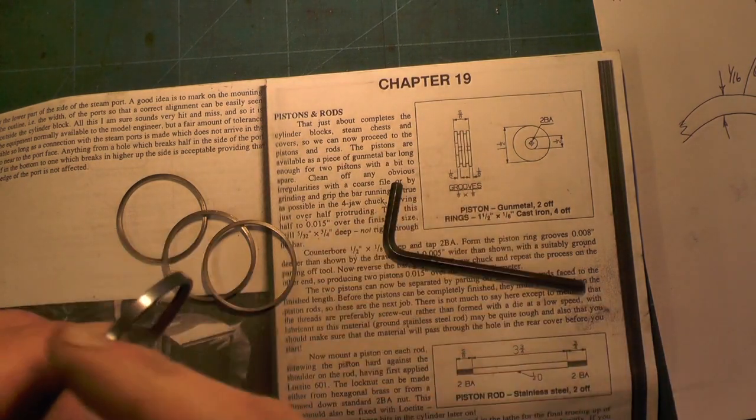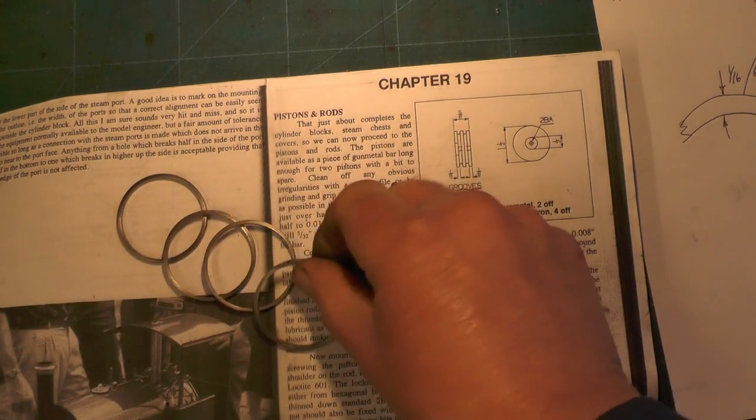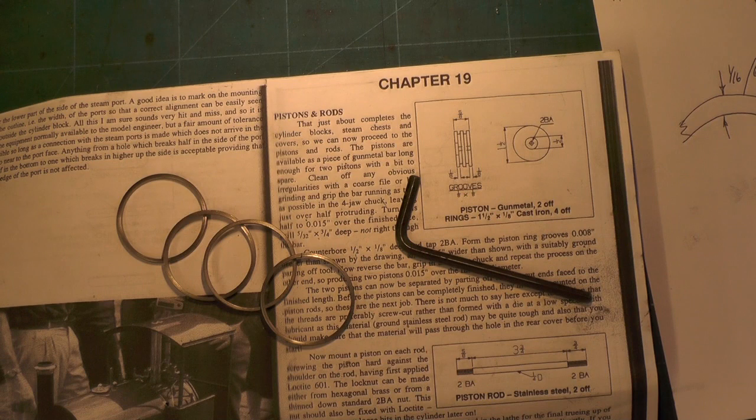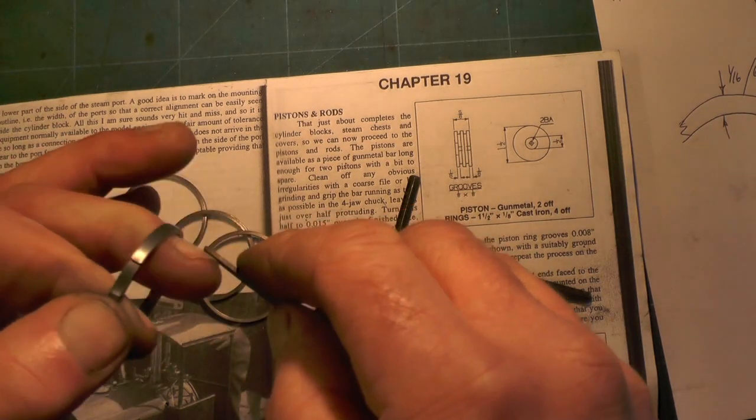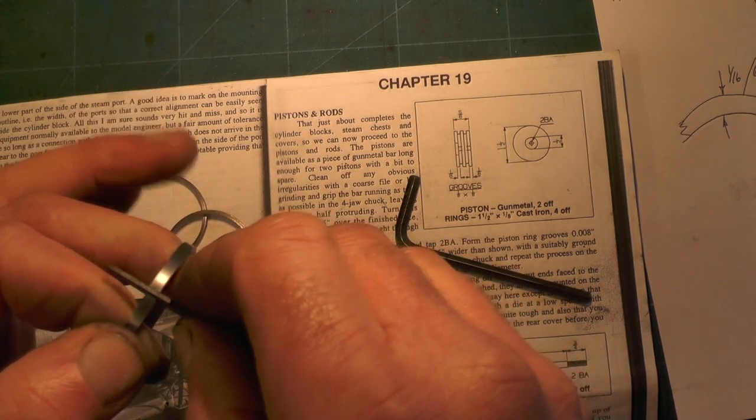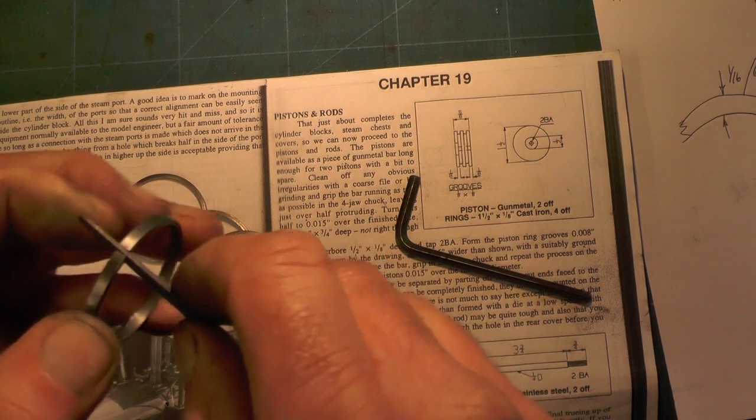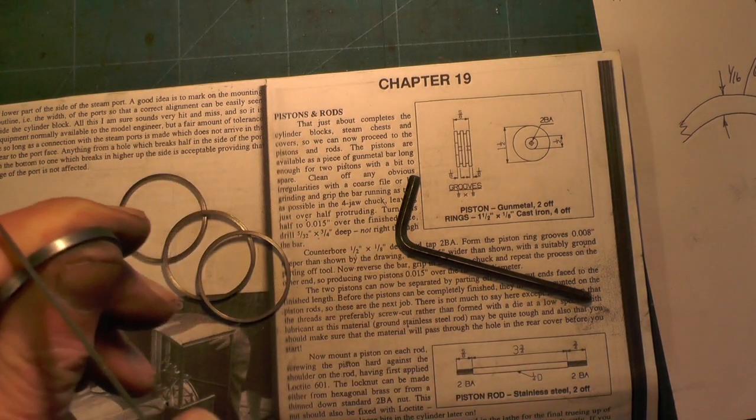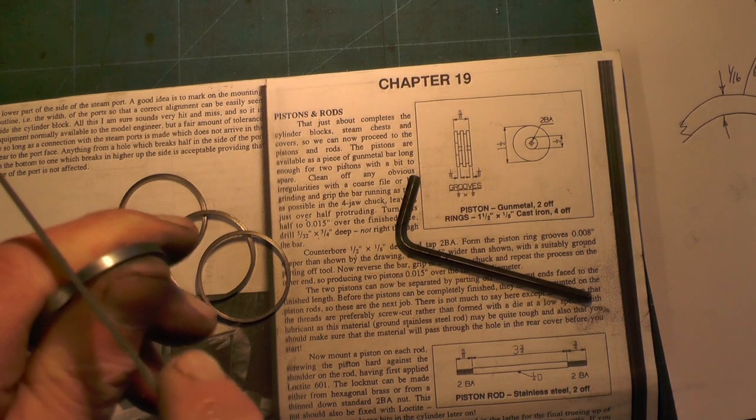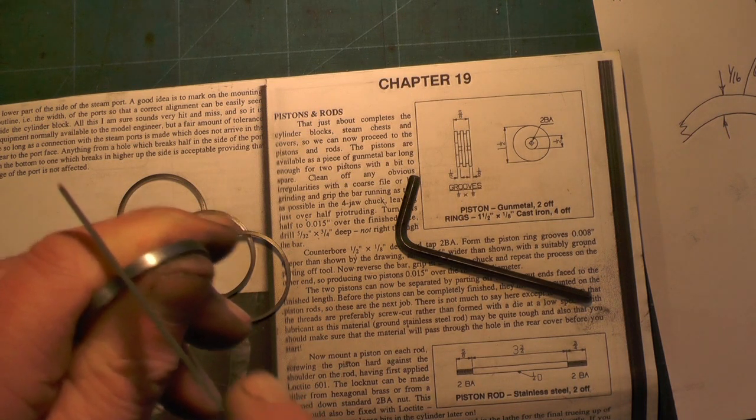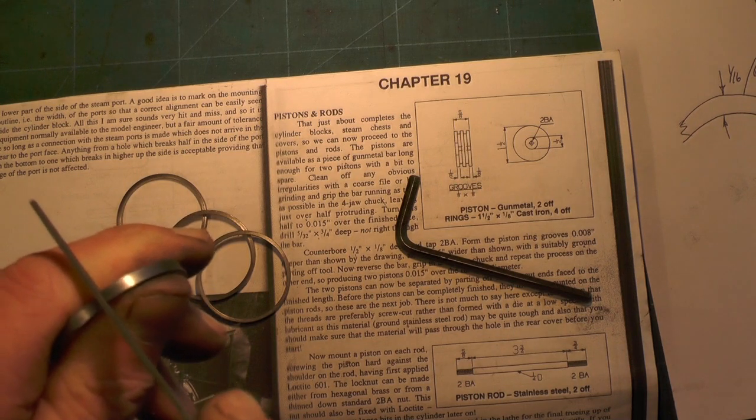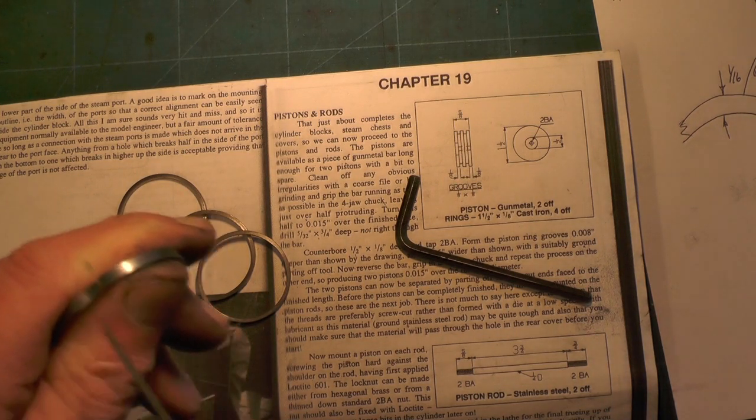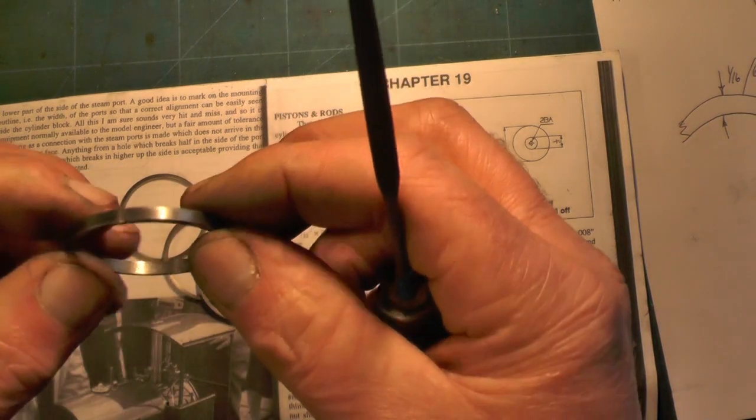Then what you've got to do is just file the roughness of the edges. It really should be done in a vice this but, just square them edges up where it's broke, like so.